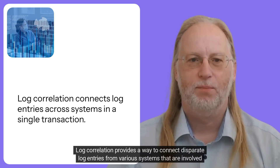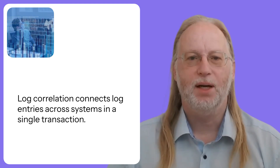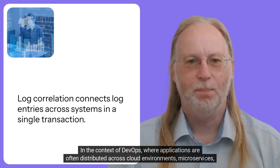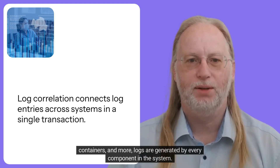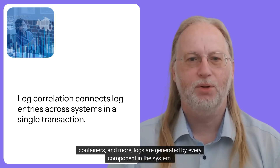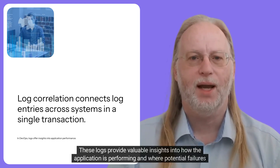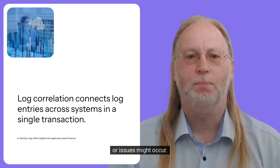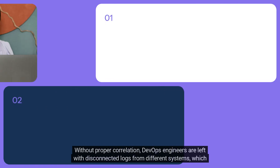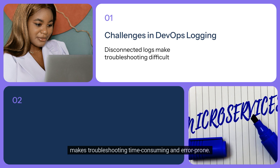Log correlation provides a way to connect disparate log entries from various systems involved in a single transaction or process. In DevOps, where applications are often distributed across cloud environments, microservices, and containers, logs are generated by every component in the system. These logs provide valuable insights into how the application is performing and where potential failures or issues might occur.